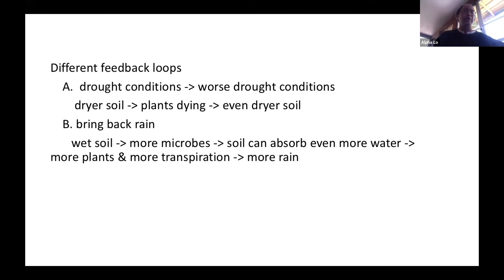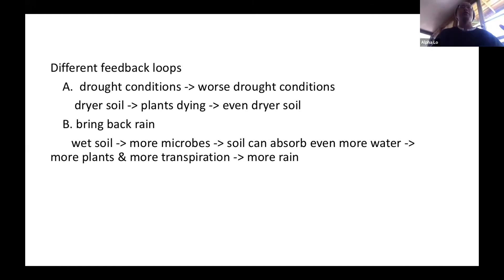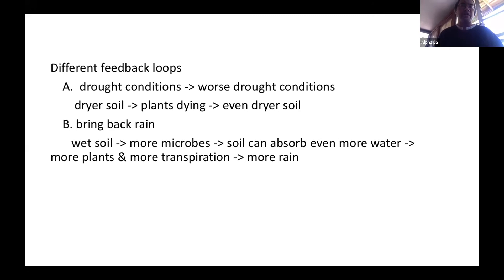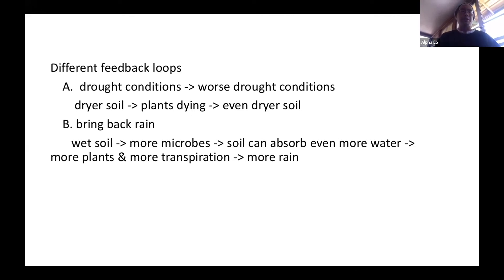If you can get to the tipping point, you can bring back the rain by creating more wet soil and more microbes, which allow the soil to have more air pockets to absorb more water, grow more plants, increase dead biomass to improve soil absorbency, and ultimately drive more transpiration and more rain. There are different attractor points in dynamical systems theory, or metastable points in thermodynamics — we are trying to get ecosystems to the healthier attractor points.